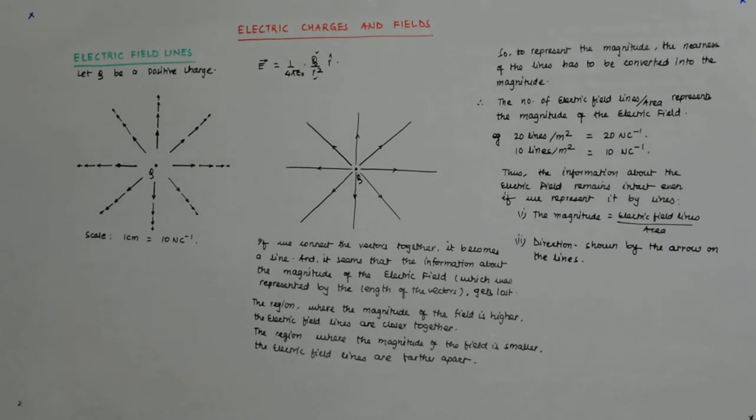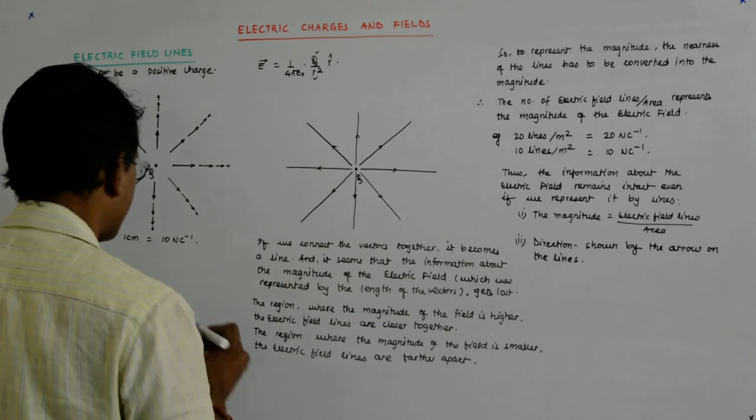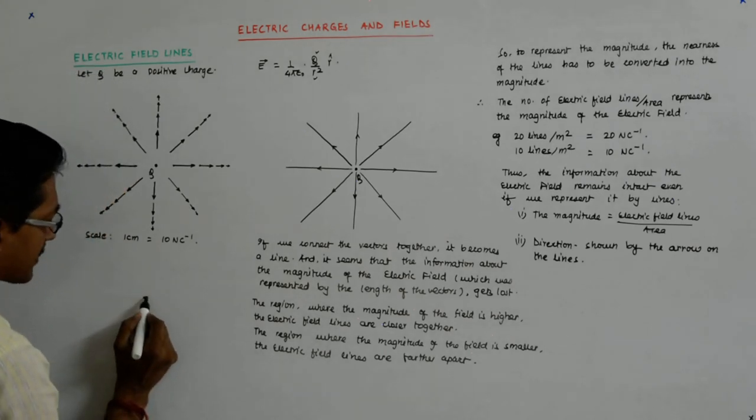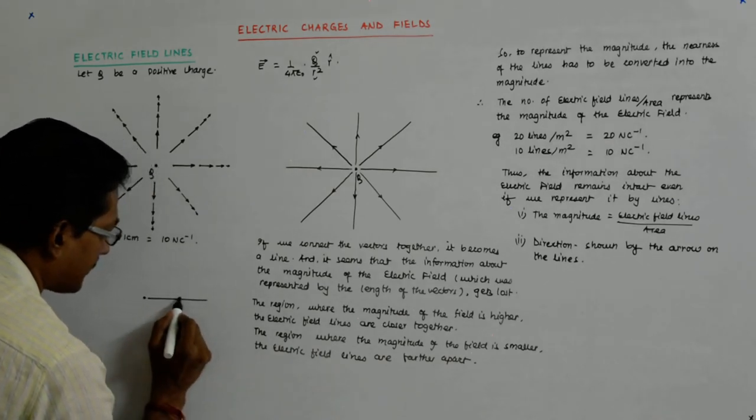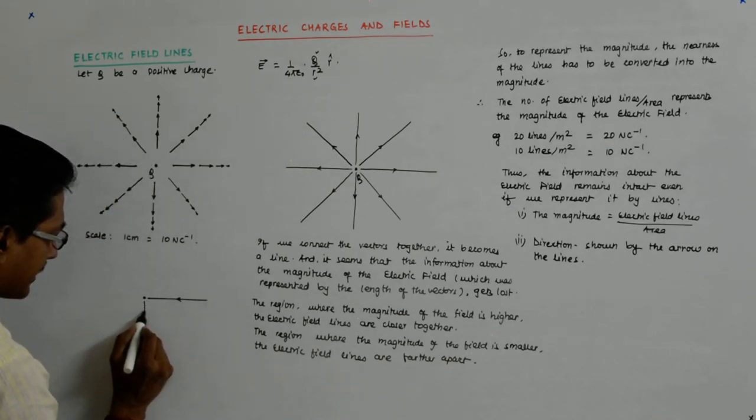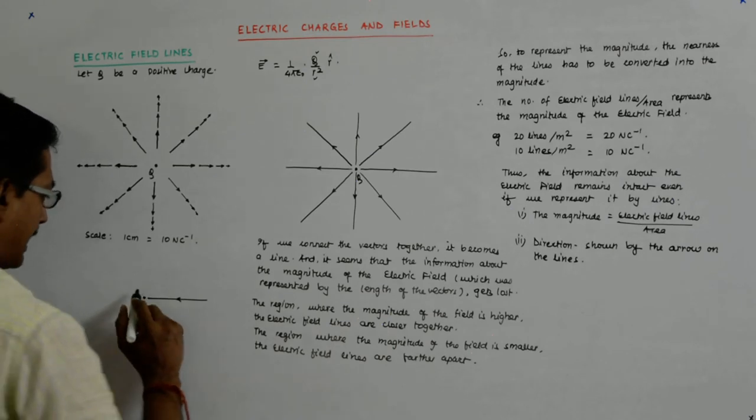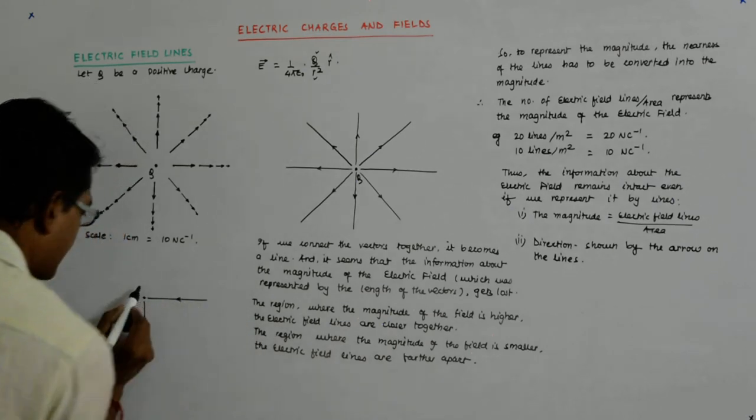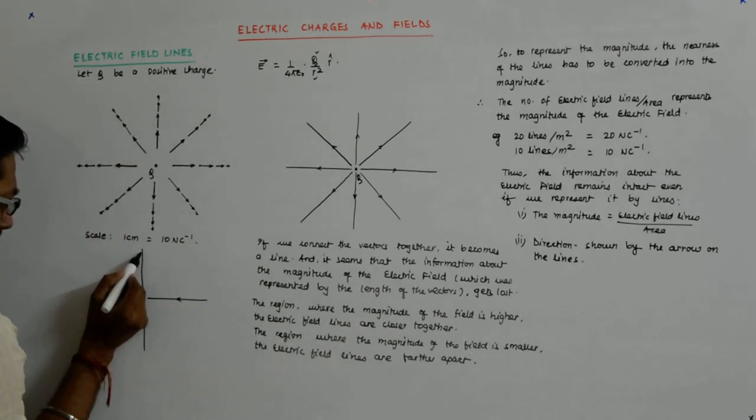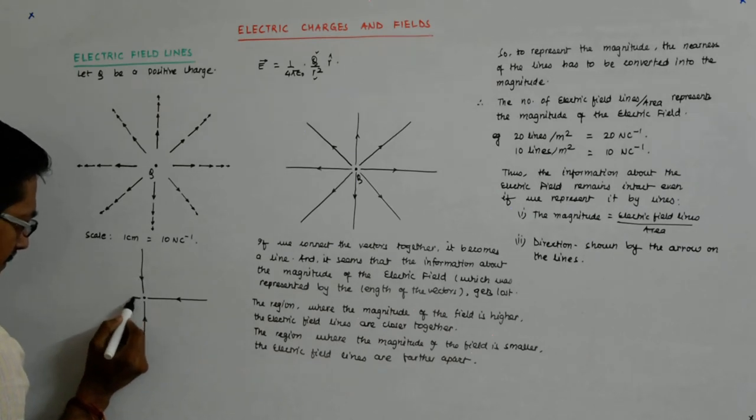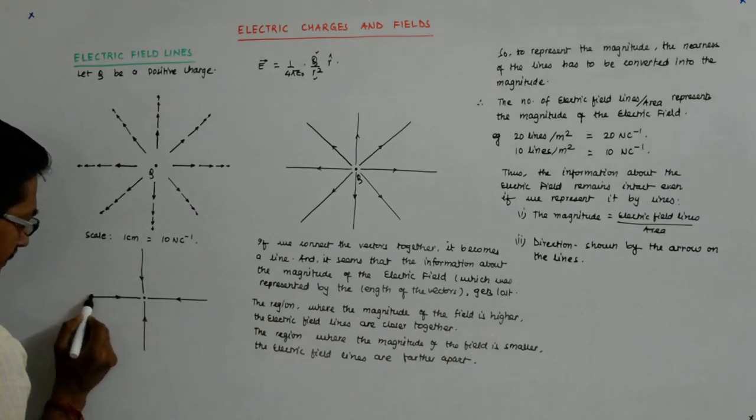The arrow on the line. And as we have discussed earlier, suppose it would have been a negative charge, say minus q, then the field would have been radially inwards and it would be represented like this.